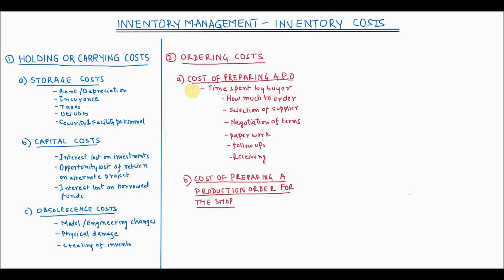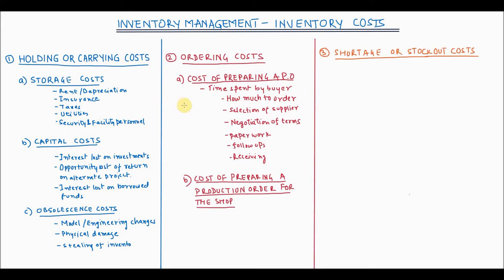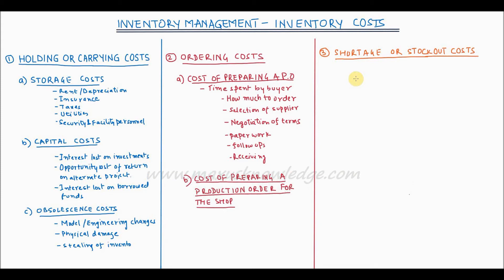Now let us look at the third type of cost, which is shortage or stockout cost. The first two costs we looked at were basically costs of carrying inventory. This third cost asks: what if you don't have inventory when there is demand? This type of cost captures the economic consequences of running out of stock. This happens when the customer places an order but it cannot be fulfilled from the inventory, meaning you lost the opportunity to make money on the item if you had that inventory.